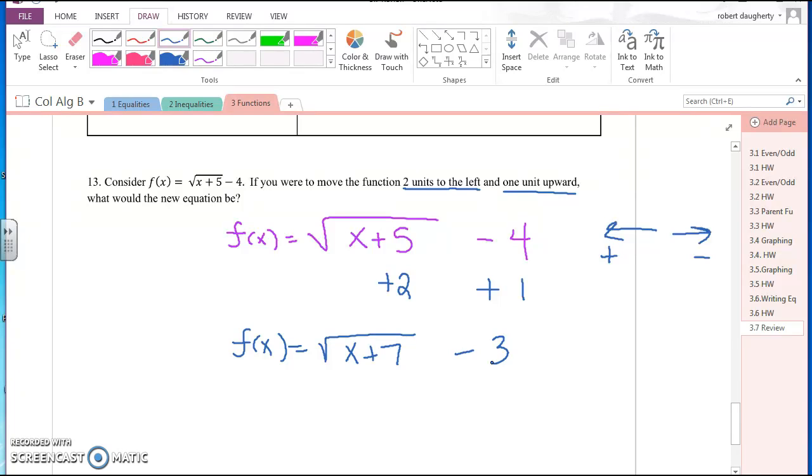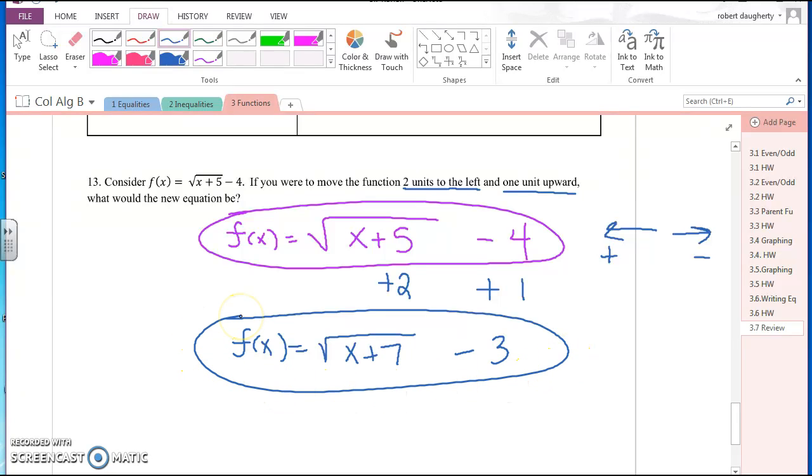So that tells me that the purple was my original function here. And if I take that function and move it to the left by 2 and 1 upward, then you see where it goes. So it's f(x) is square root of x plus 7 minus 3.